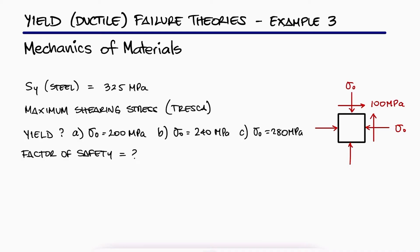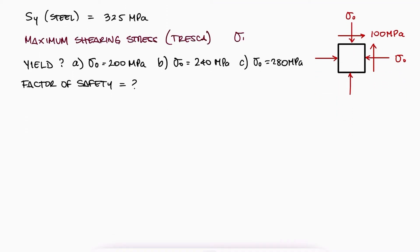From what we learned in that main video, the maximum shearing stress or TRESCA criterion states that if σ1 minus σ3 does not exceed the yield strength, yield will not occur. The associated factor of safety would be the yield strength over σ1 minus σ3.